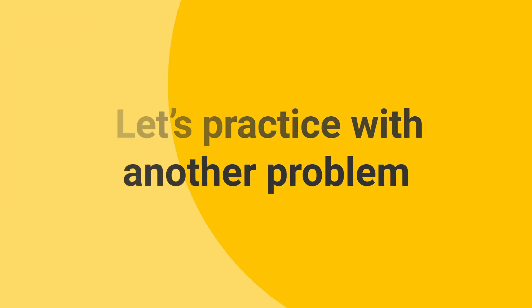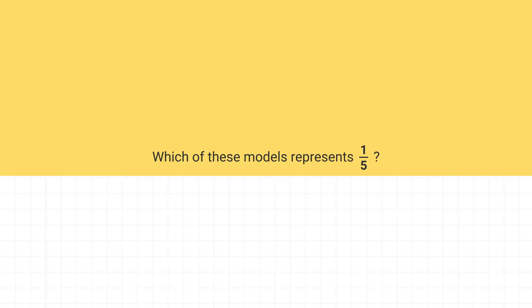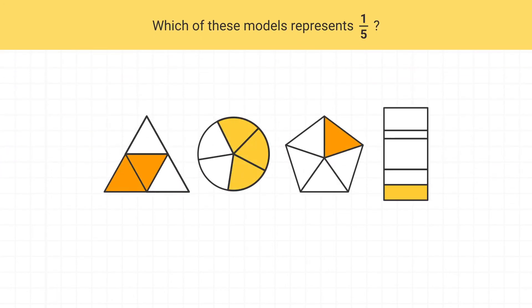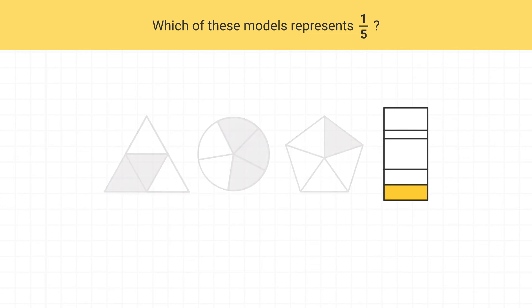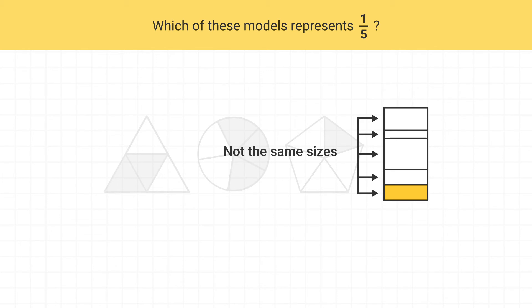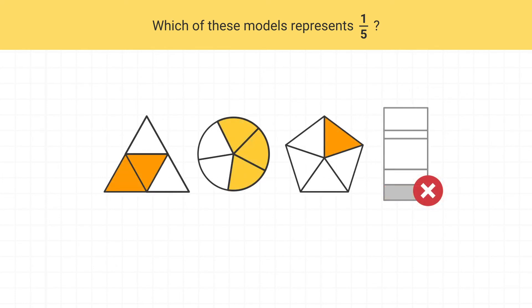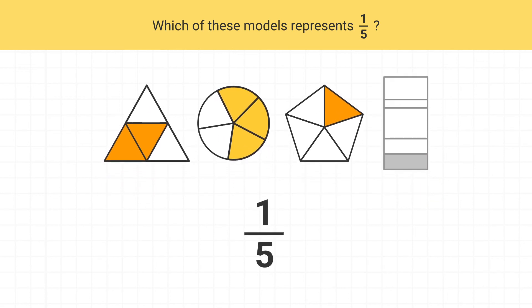Let's practice with another problem. Which of these models shows 1 fifth? Before I even look at the fraction, I can immediately see that this model can't be the correct answer. Remember that each piece of a fraction must be the same size. The pieces in this model are all different sizes, so this doesn't show 1 fifth. Now, the denominator of our fraction is 5, which means our model must have 5 total pieces.